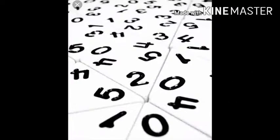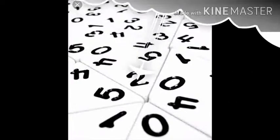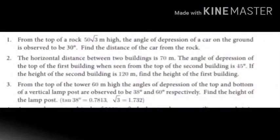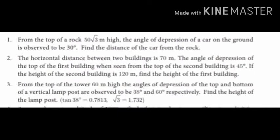In today's session of trigonometry, we have the problem: From the top of a rock 50√3 meters high, the angle of depression of a car on the ground is observed to be 30 degrees. Find the distance of the car from the rock.